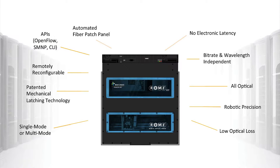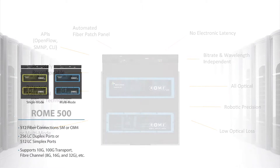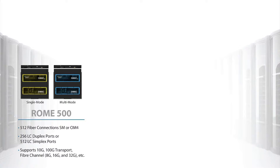Roam supports a wide range of fiber connections from 512 to 2048, with no latency and low optical loss. The Roam 500 offers 512 fiber connections in either 256 LC duplex ports or 512 LC simplex ports, available in single mode or multi-mode connectivity. Some example applications are 10G, 100G, and fiber channel.